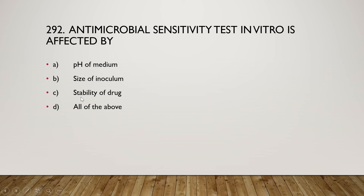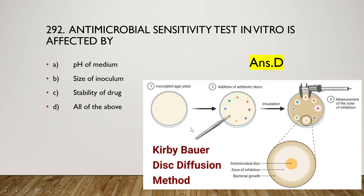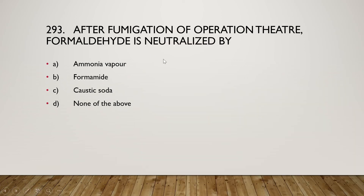The next question is: antimicrobial sensitivity testing in vitro is affected by (A) pH of medium, (B) size of inoculum, (C) stability of drug, or (D) all of the above. The right answer is option D — all of the above. This is the Kirby-Bauer disc diffusion method, where an inoculated agar plate with different antibiotic discs is incubated. The zone of inhibition is then measured — a larger zone means the antibiotic is more effective against that bacteria.